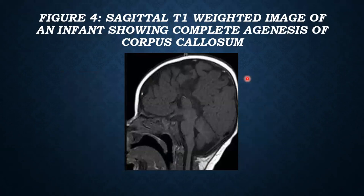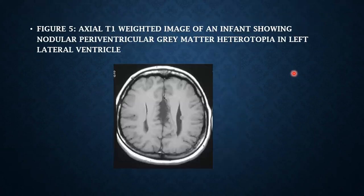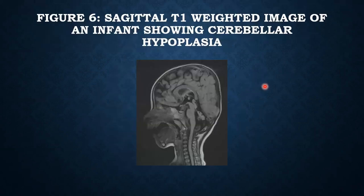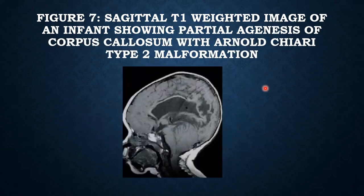Figure 4 shows a sagittal T1 weighted image of an infant showing complete agenesis of the corpus callosum — there is no corpus callosum seen in this mid-sagittal section. Figure 5 shows an axial T1 weighted image of an infant showing nodular periventricular gray matter heterotopia in the left lateral ventricle. Figure 6 shows a sagittal T1 weighted image of an infant showing cerebellar hypoplasia where the cerebellum is grossly reduced in size. Figure 7 shows a sagittal T1 weighted image of an infant showing partial agenesis of the corpus callosum with Chiari type 2 malformation seen in the posterior fossa.